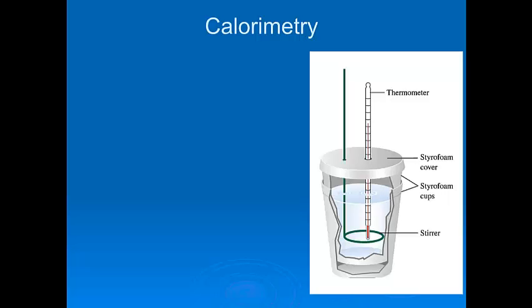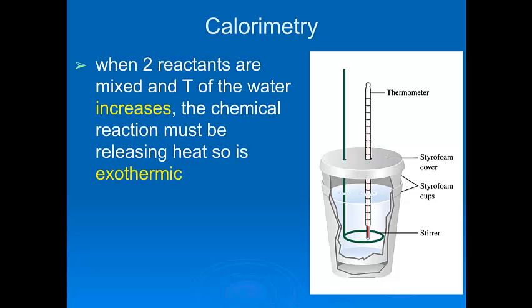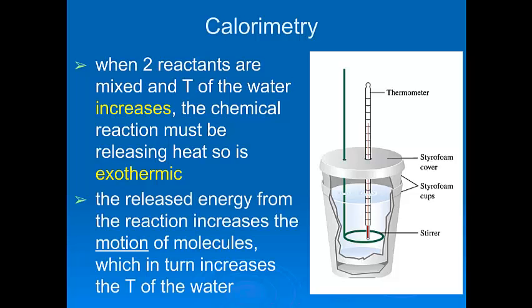So how does it work? We have our calorimeter with its cover, thermometer, stirrer, and styrofoam cups, and inside we have some solutions. This type of calorimeter can only work with things that are in solution — you're not going to burn anything inside styrofoam cups filled with water. If we have two reactants in solution, we react them together inside the calorimeter. If the temperature of the water goes up, that means the water is gaining heat — it's taking heat from the reaction — and that means the reaction must be losing heat. In other words, the reaction must be exothermic.